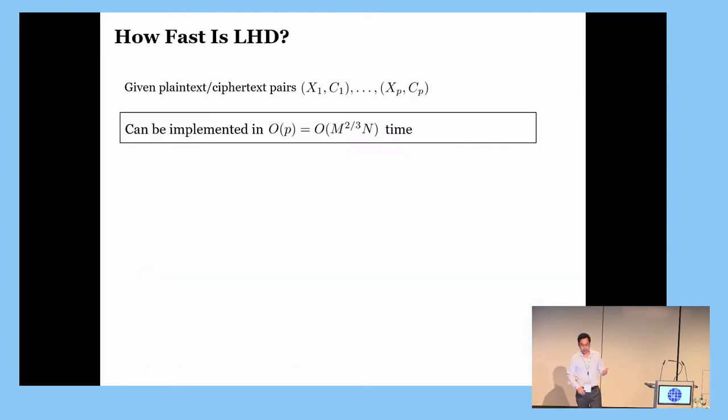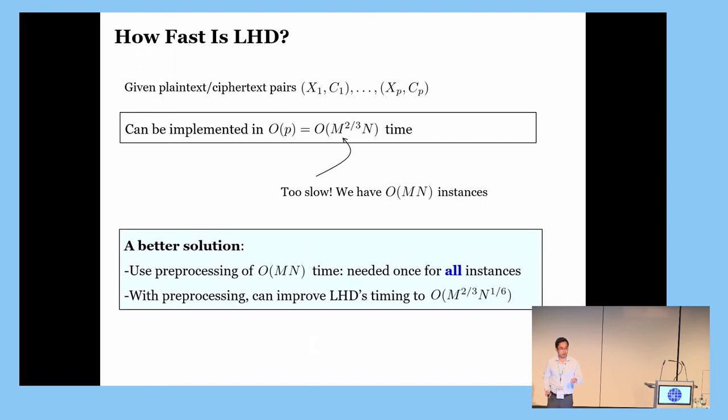So, how fast is this test? In the first pass, we are given P pairs of plaintext-ciphertext. So, at best, we probably can do at most linear time of that, but that is too slow for our purpose. To speed things up, we developed a preprocessing of MN time, but this one is needed only once for all of the instances. With this common preprocessing, we can speed the running time of LHD by almost a factor of N. So, this one is somewhat fast, but how good is that?